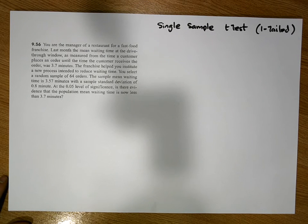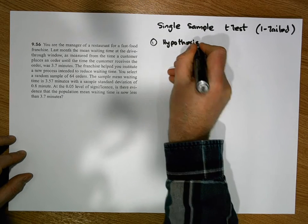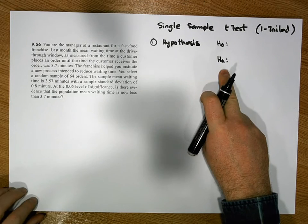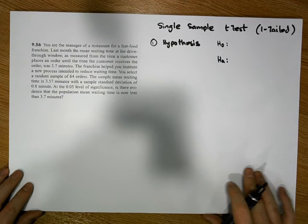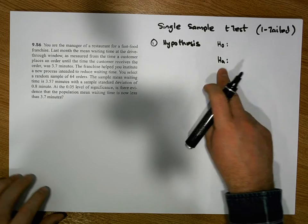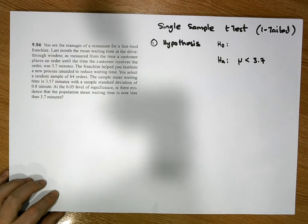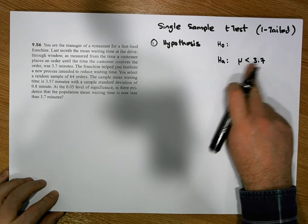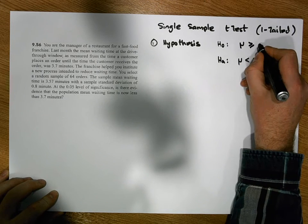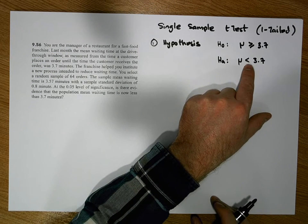Like all our hypothesis tests, there is a five-step procedure. Step one is to define our hypotheses. Our hypothesis has two positions: a null and an alternative. The alternative is always what we're trying to prove — in this case, that the population mean waiting time is less than 3.7 minutes. The null must therefore be that the population waiting time is greater than or equal to 3.7 minutes.